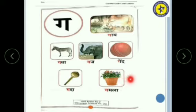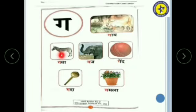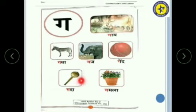Now we will revise it one more time. G say Gai. G say Gadha. G say Gaj. G say Gend. G say Gada. G say Gamla.